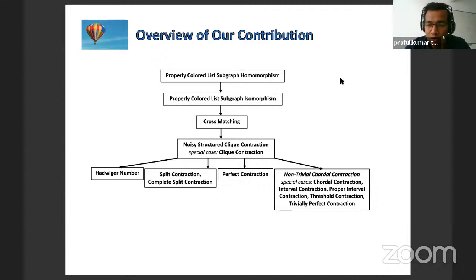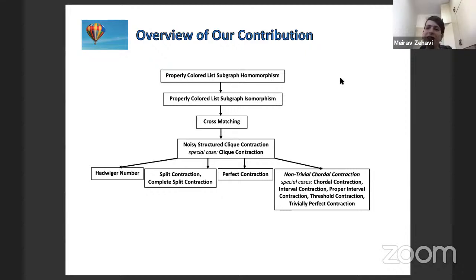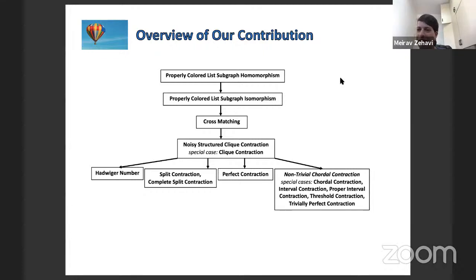A follow-up question: does the machinery crucially depend on N — can we derive FPT lower bounds by modifying these ideas? Mayref says the dependency on N seems crucial, but the ideas could potentially be adapted in a clever way; however, this is currently unknown.